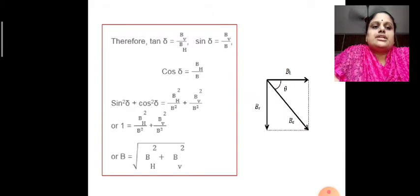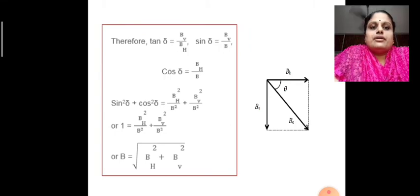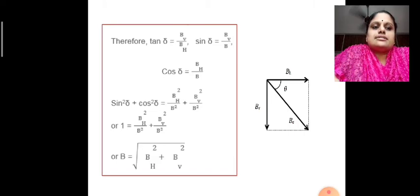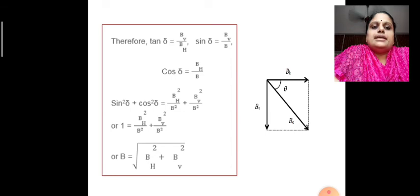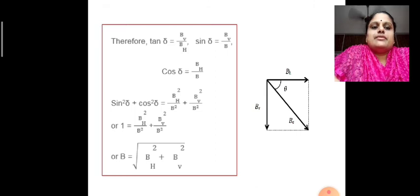Considering BH (horizontal component), BV (vertical component), and the total magnetic field BE, from the figure we know: tan θ = BV / BH, sin θ = BV / BE, and cos θ = BH / BE. From these equations, sin²θ + cos²θ = BH² / BE² + BV² / BE², which gives 1 = (BH² + BV²) / BE², and therefore the total magnetic field BE = √(BH² + BV²).